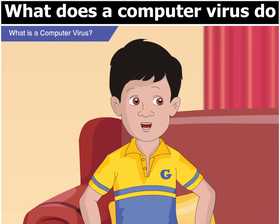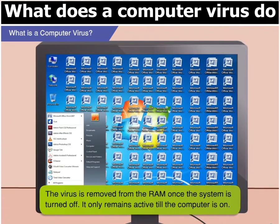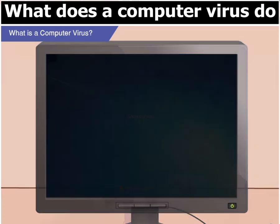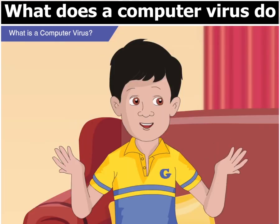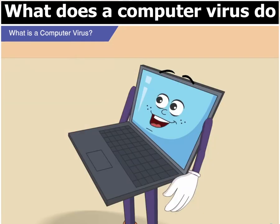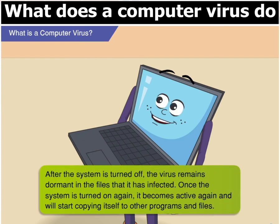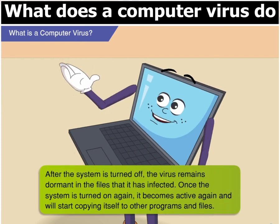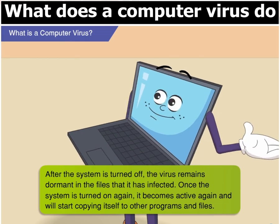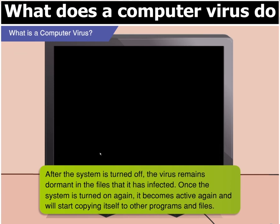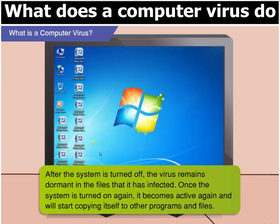But tell me something. What happens to the viruses when the computer is turned off? Well, Goggle, a virus becomes inactive once the computer is turned off as the virus is removed from the RAM. This means a virus is not active when the computer is off. So that means we can remove a virus simply by turning off the computer, right? No, Goggle. Simply turning off the system will not remove the virus but merely inactivates it. It remains dormant in the files that it has infected. Once the system is turned on again, it becomes active again and will start copying itself to other programs and files.